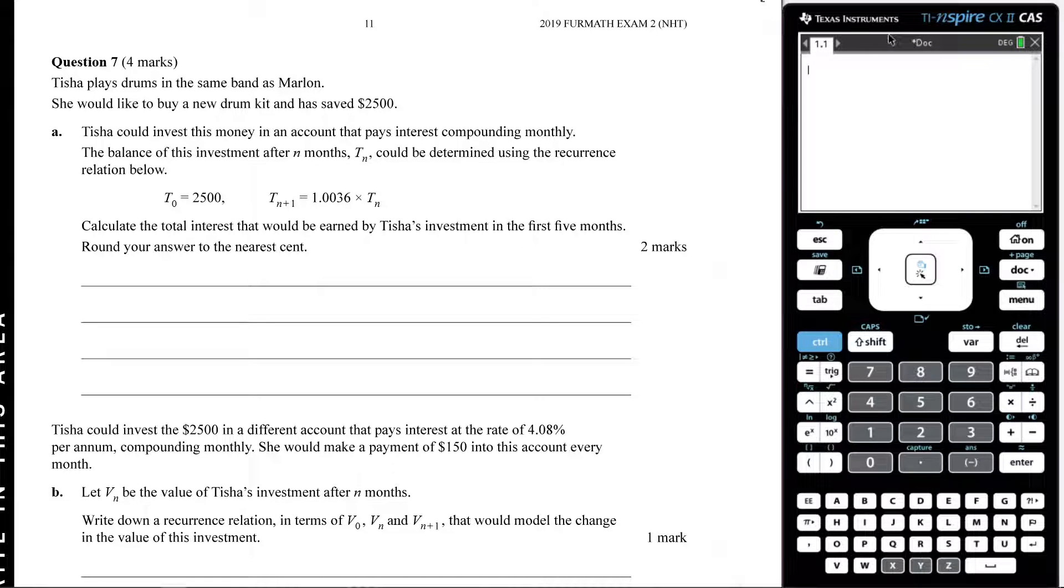All right, we're now going to answer question seven here. It says Tisha plays drums in the same band as Marlon. She would like to buy a new drum kit and has saved $2,500. Tisha could invest this money in an account that pays interest compounding monthly. The balance of this investment after N months could be determined using the recurrence relation below.